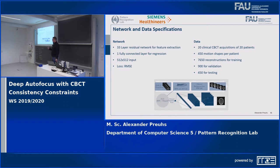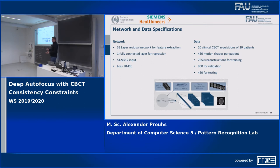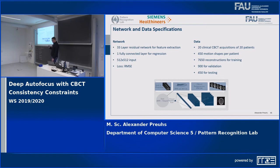Our input is 512×512 images. We use root mean square error as the loss, since our labels are perfectly accurate — the reprojection error is computed exactly. We use 20 clinical cone beam CT acquisitions and for each patient modulate 450 different motion shapes, giving approximately 7,000 reconstructions for training, 900 for validation, and 450 for testing.